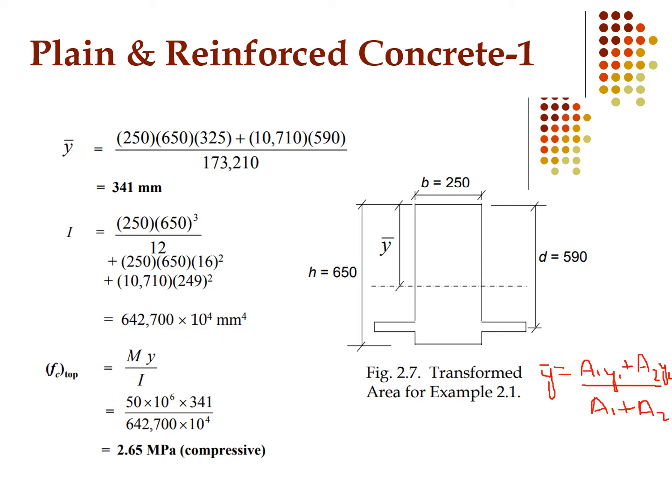Now we calculate the stress at the top. Using the flexure formula f = MY/I, where M = 50 kN·m = 50 × 10⁶ N·mm, Y = 341 mm (distance from neutral axis to top), and I as calculated. We get stress at the top = 2.65 MPa in compression.